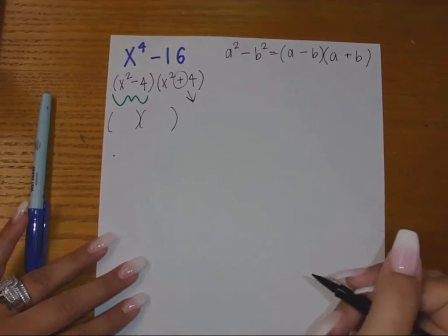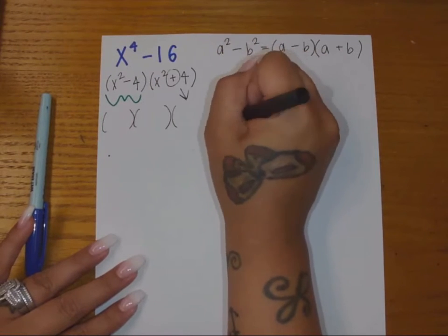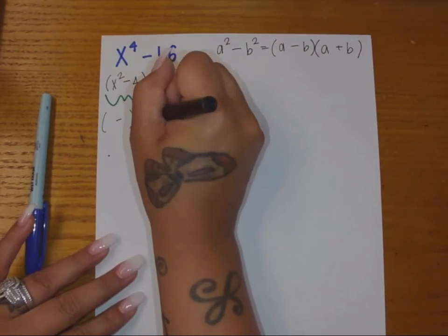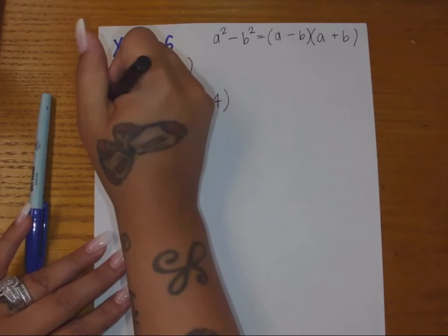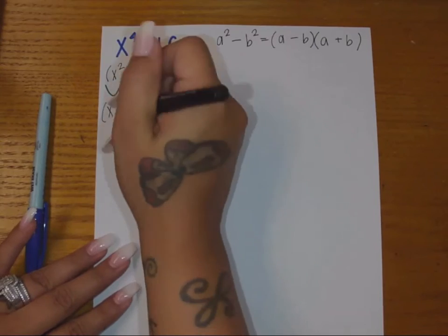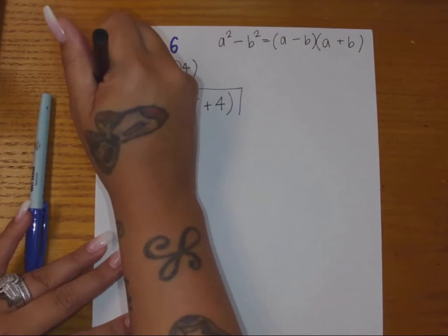That positive sign right there keeps me from being able to further simplify that, so I'm actually just going to bring it down. Then my template says one's negative, one's positive. What times itself would be X squared? That would be X. What times itself gives me four? That would be two. Now this is my final answer.